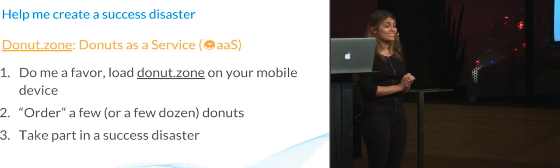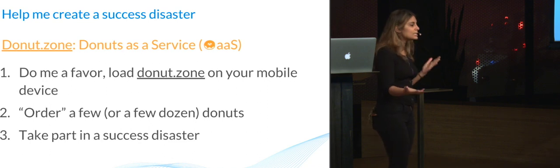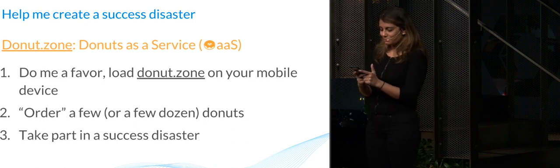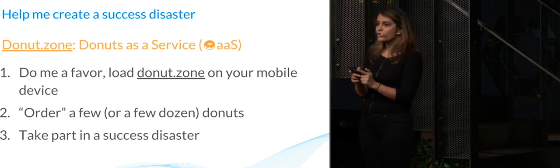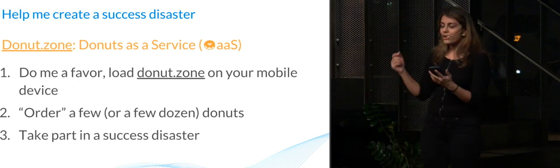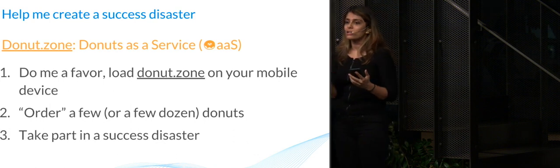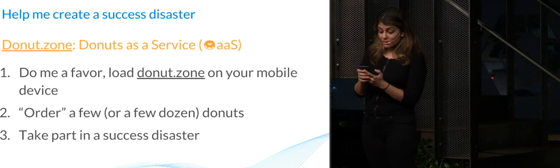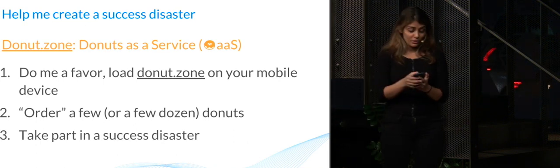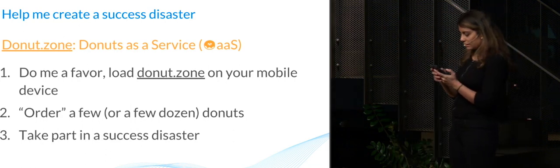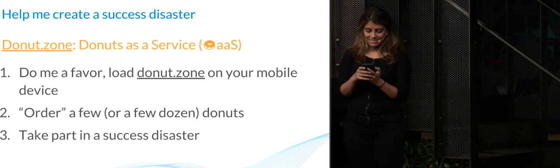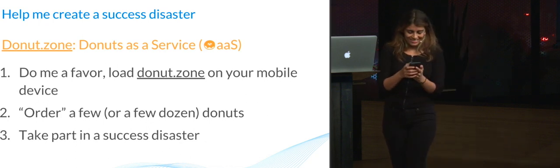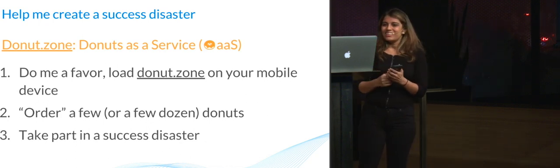Okay, so now we're going to get to the success disaster part. If you can please pull out your mobile phones or laptop, whatever you may have, and go to donut.zone — just start ordering a bunch of donuts, as many as you would like in a dream world where there were no calories. Click away because if you don't do this, there will be no good traces to see. Okay, tap, click — let's do a little more for good measure. Don't be shy, click a lot. Great, thank you so much.